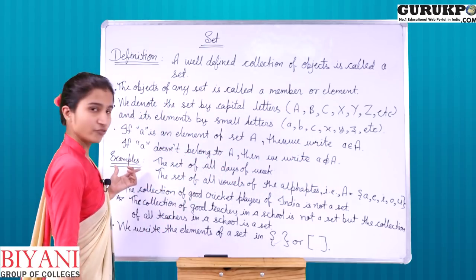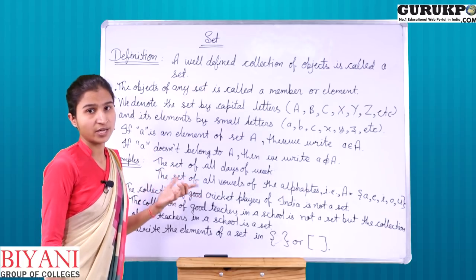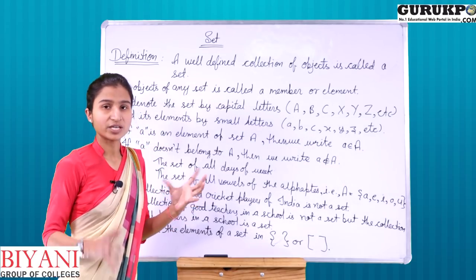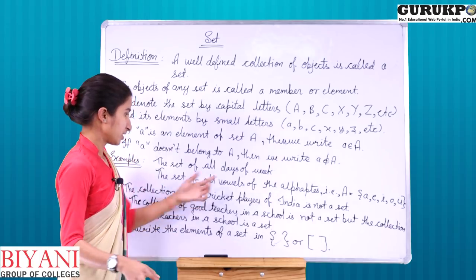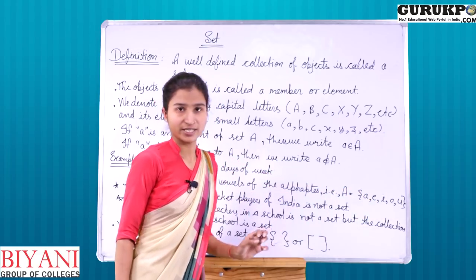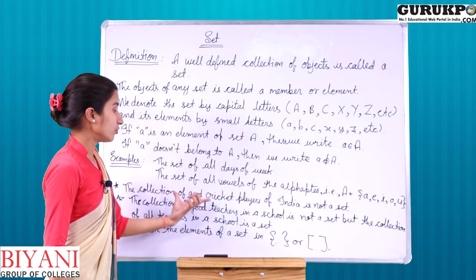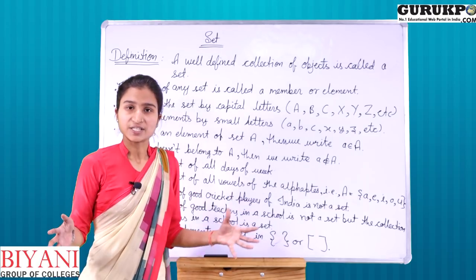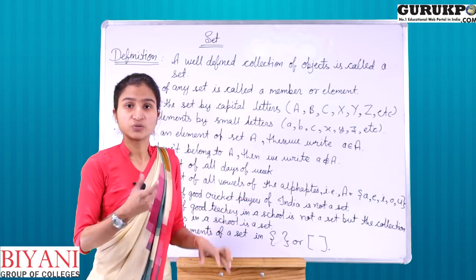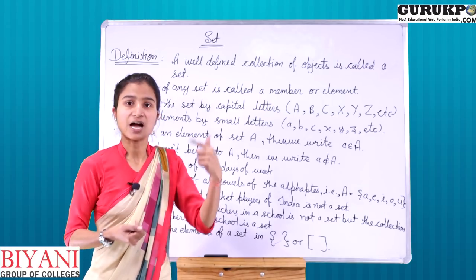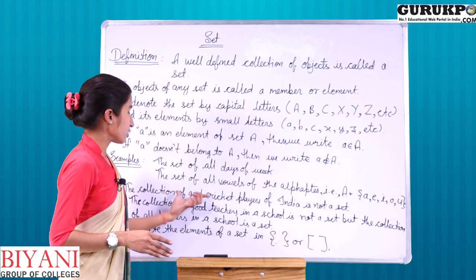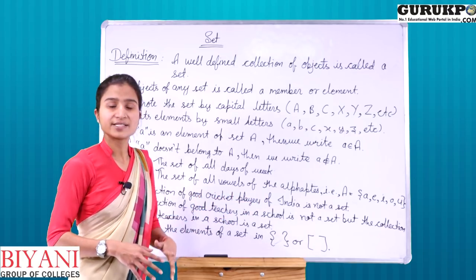For examples: the set of all days of the week is the same for everyone. Second, the set of all vowels of the alphabet — alphabets के 5 vowels होते हैं: A, E, I, O, U — उनका set सभी के लिए same है। But the collection of good cricketers/players of India is not a set, because who is a 'good' player may differ from person to person — it is not well-defined. इसलिए the collection of good cricket players of India एक set नहीं है।